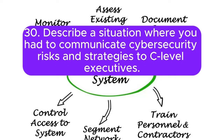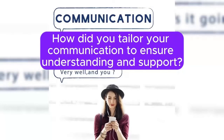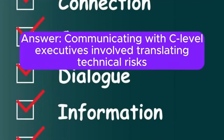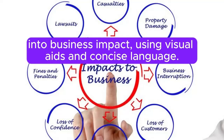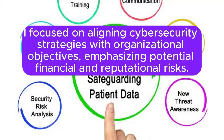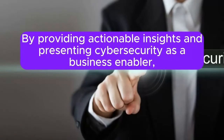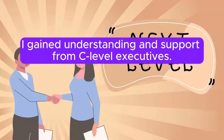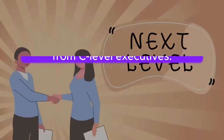Question 30: Describe a situation where you had to communicate cybersecurity risks and strategies to C-level executives. How did you tailor your communication to ensure understanding and support? Answer: Communicating with C-level executives involved translating technical risks into business impact, using visual aids and concise language. I focused on aligning cybersecurity strategies with organizational objectives, emphasizing potential financial and reputational risks. By providing actionable insights and presenting cybersecurity as a business enabler, I gained understanding and support from C-level executives.